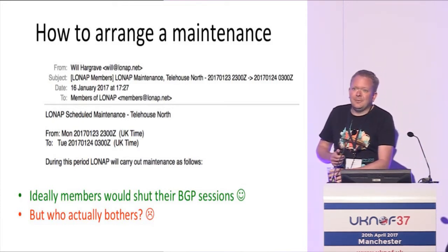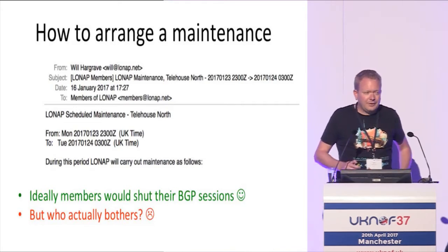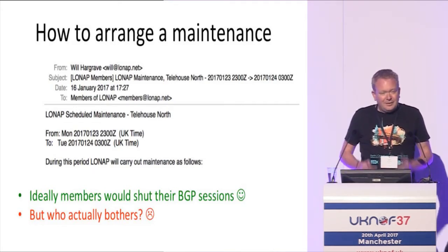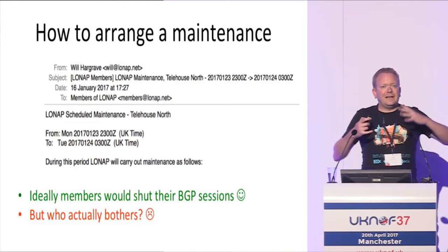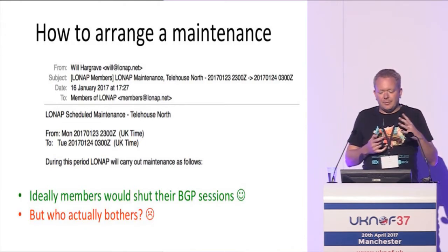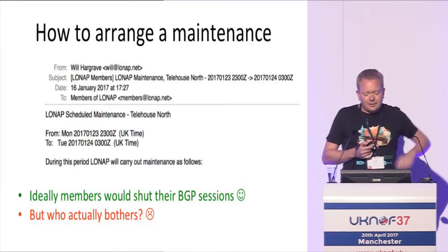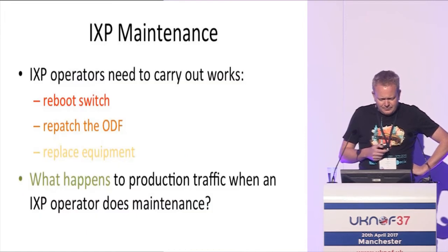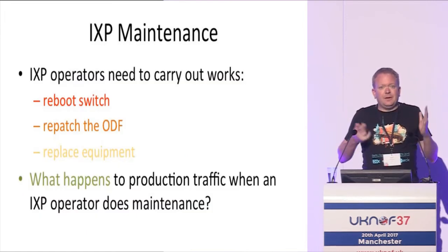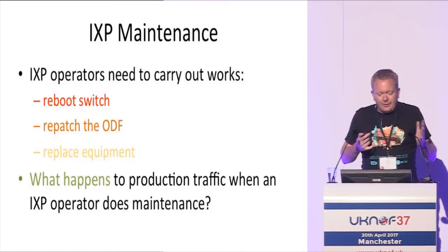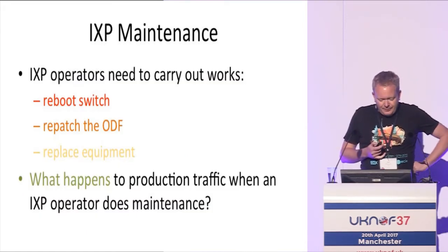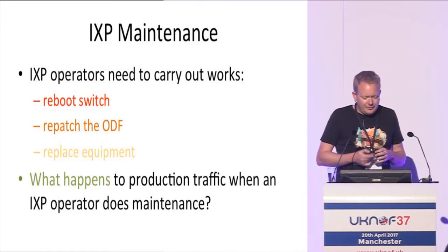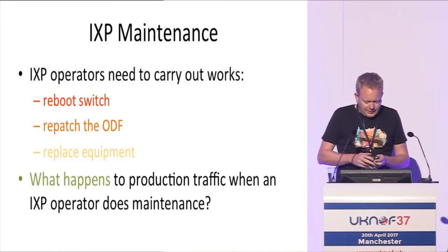There is some bias here — they already know we're taking some other steps. But actually, people cannot collate this amount of information; they can't actually act on it. As I said, we need to carry out these works. We don't have any choice. So what actually happens to production traffic when we do a maintenance?